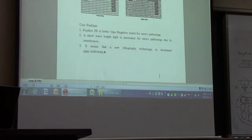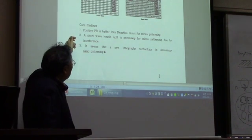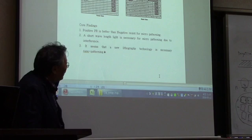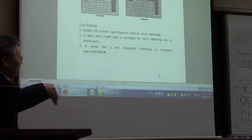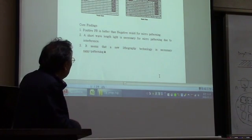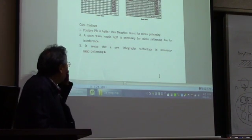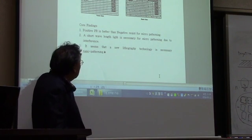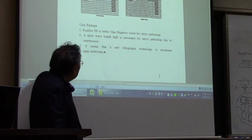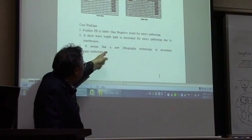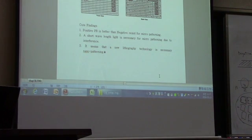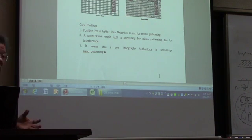Core findings: positive PR is better than negative PR for micro patterning because of resolution. Short-wavelength light is the way to achieve high resolution due to light interference and fringes on the wall. However, X-ray and e-beam have their own limitations, so deep UV is currently the most common light used in industry. A new lithography technology is necessary for nano patterning.